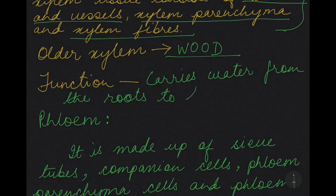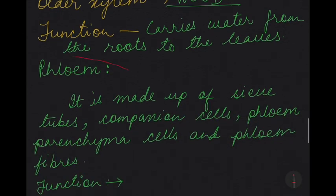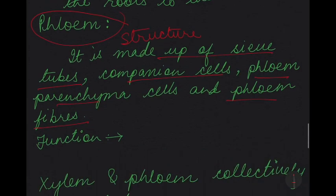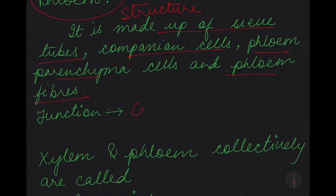The function of xylem is to carry water from the roots to the leaves or wherever it is required. Now moving on to phloem. The structure of phloem: it is made up of sieve tubes, companion cells, phloem parenchyma and phloem fibers. These are the various components that make up the phloem, and they are made up of different types of cells — that is why xylem and phloem are known as complex tissues.